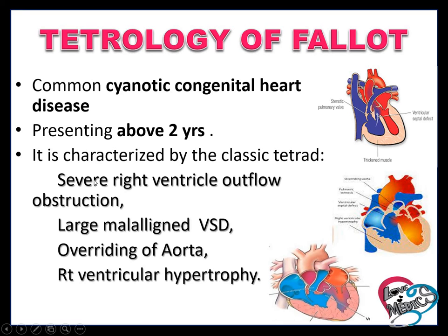The four classical features of tetralogy of Fallot are: first, severe right ventricular outflow obstruction, which means pulmonary stenosis; second, a large mal-aligned ventricular septal defect (VSD); third, overriding of the aorta, which passes from the right side to the left side supplying all parts of the body; and fourth, right ventricular hypertrophy.